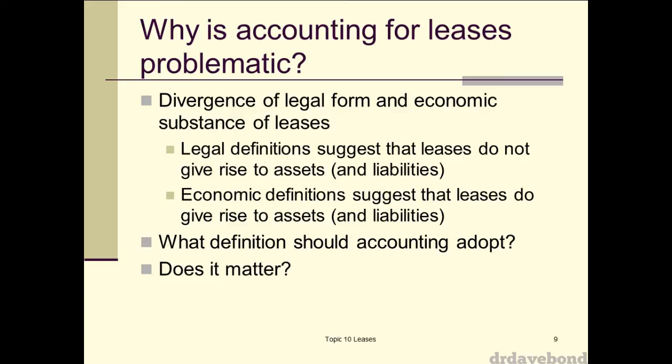Where it becomes problematic — and this is an idea touched on before — is that the legal idea of what an asset is, who controls it and who has title to it, is different from what the economic substance is. From a major long-term airline lease, legally the airline won't actually own that asset, so from a legal perspective they would not show an asset on their books. But accounting doesn't use a legal definition — it takes a much more economic approach. If they control that asset and it looks for all intents and purposes like they own it, then they need to bring it onto the books. Legal definitions say don't; economic definitions say do. Which should we adopt, and does it matter? Well, it does.